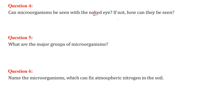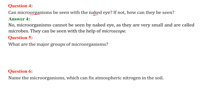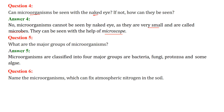Can microorganisms be seen with the naked eye? If not, how can they be seen? Microorganisms, as the name suggests, cannot be seen with the naked eye - that is, with our normal eyes. For that, we need a microscope. They are very small, which is why we call them microbes. If we want to observe them, we need a microscope. Examples include bacteria, fungi, protozoa, and algae. Sometimes when your throat is bad or you get a skin disease, it is said to be a fungal effect.